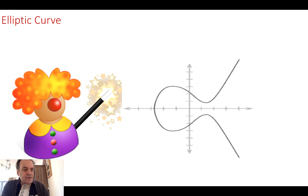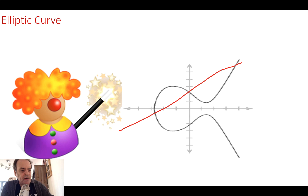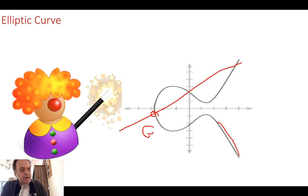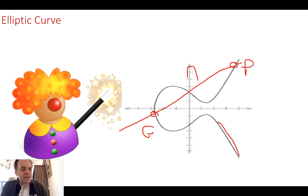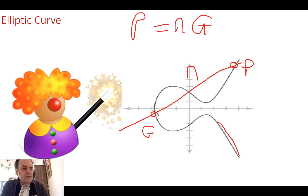Before we look at the actual methods, let's look at how elliptic curve actually works, because it's used in a lot of applications now. We create an elliptic curve defined by a certain equation, then we define a point G on that curve. We then create a random number n, which gives us a point on the curve. n is the scalar, so P is equal to n times G.